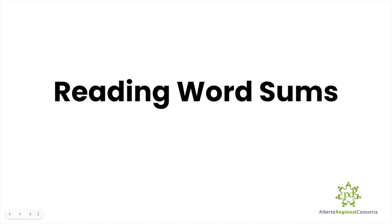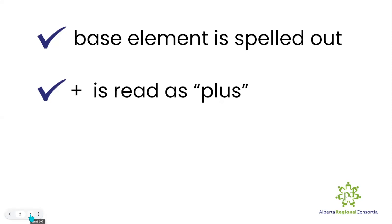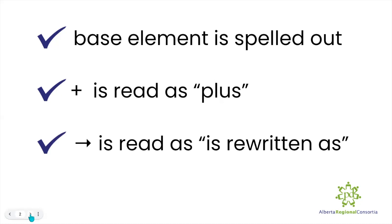Welcome to a brief overview on how to read word sums. When reading word sums, you need to remember that the base element, or just the base, is always spelled out rather than said as a word. Next, when you see the plus sign, we read it as plus. And lastly, when you see the arrow, it is read aloud as 'is rewritten as.'